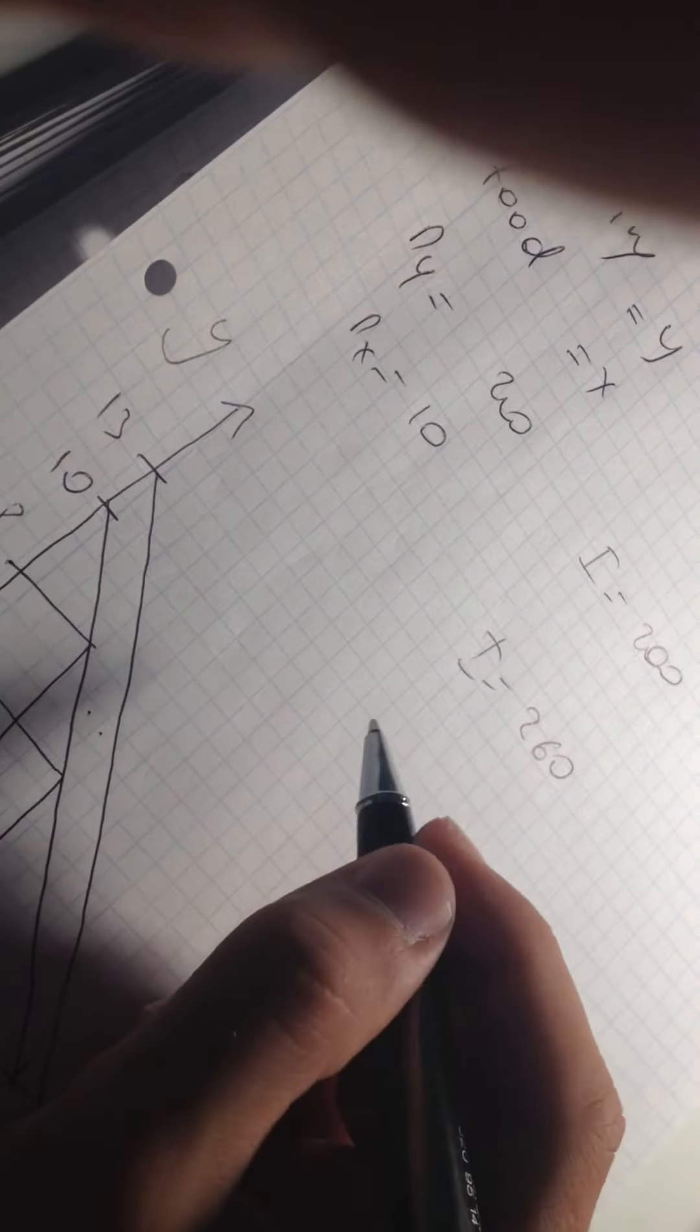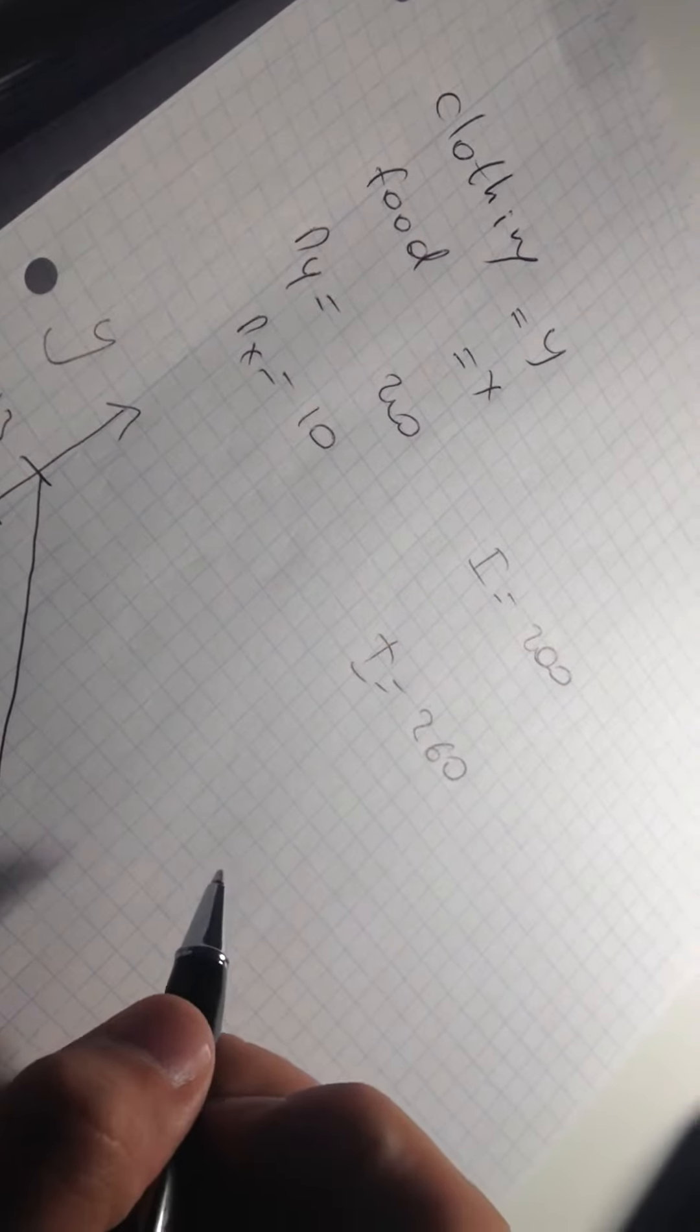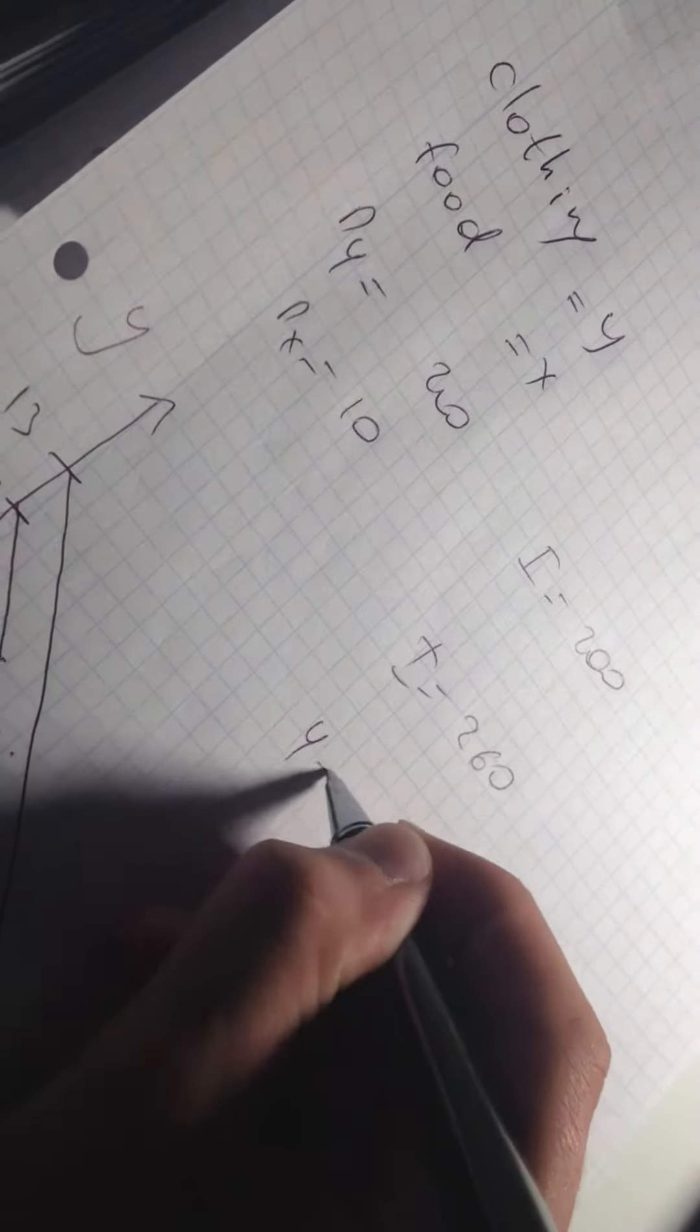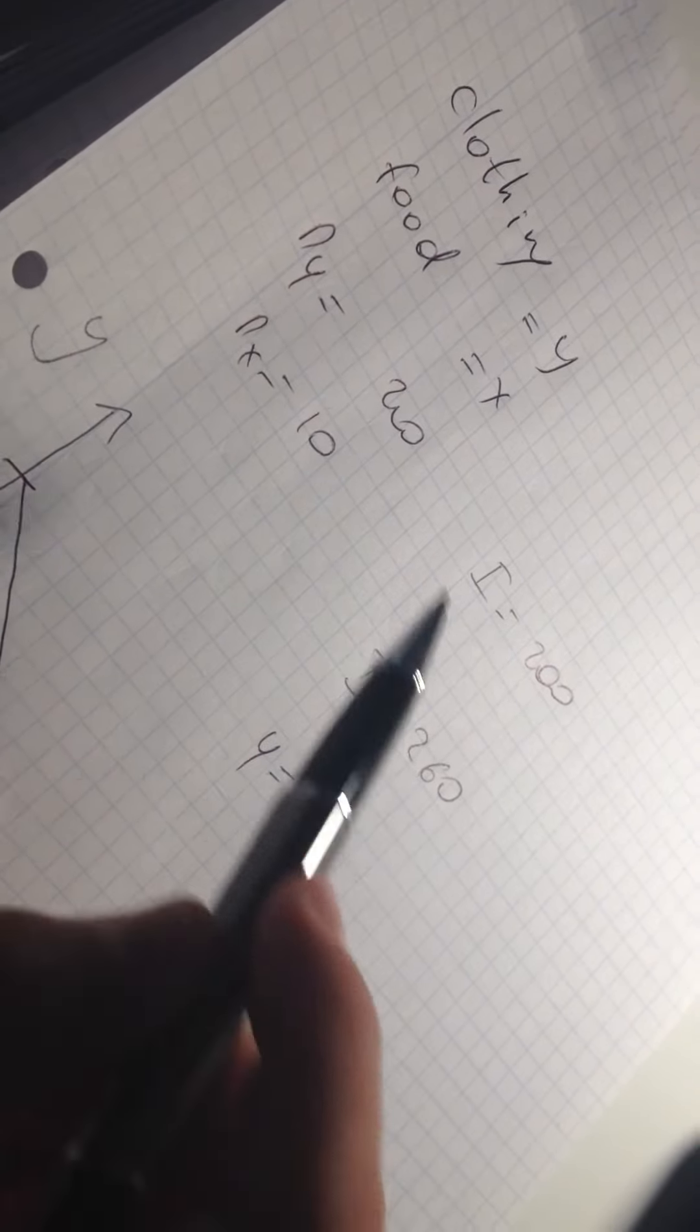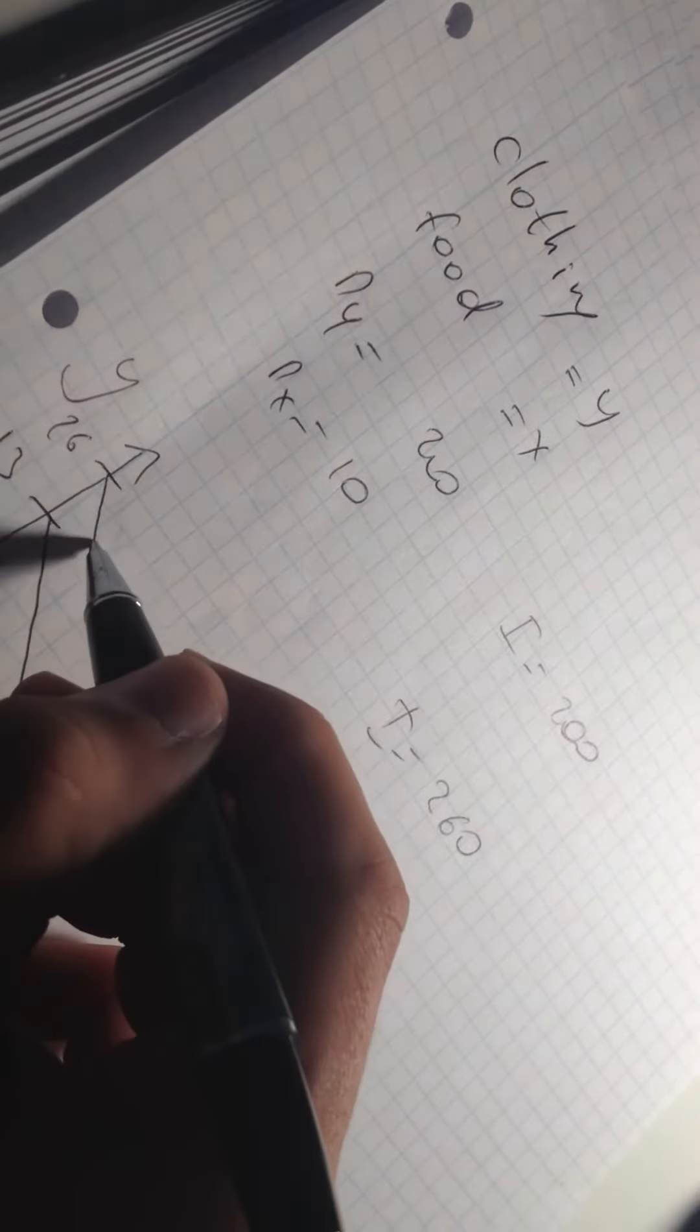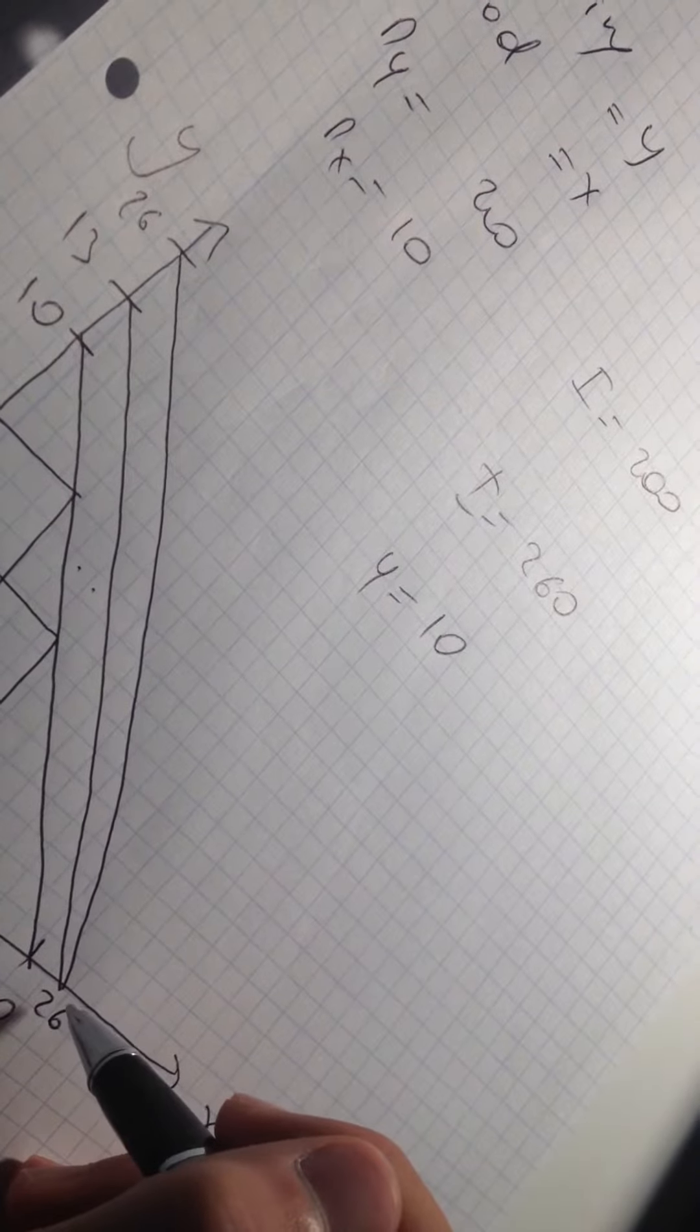Now we have another example. For example, he can say ok, that was inflation and maybe it was 0 inflation or something else and our clothes became cheaper. Now it's going to be 10. So if it's going to be 10, he can buy, if his income is now this one, he can buy now 26 clothes and he can buy still 26 food. So he can buy now more clothes and at the same time he can buy the same amount of food.